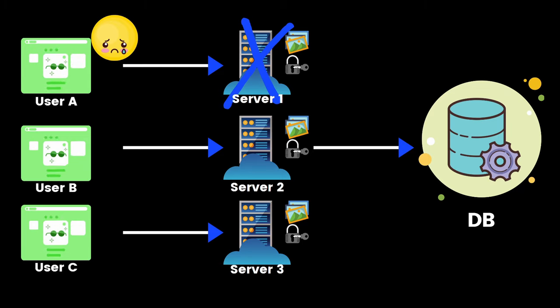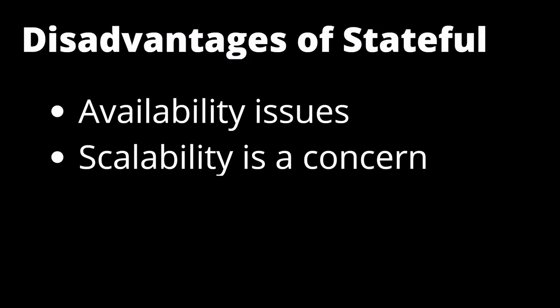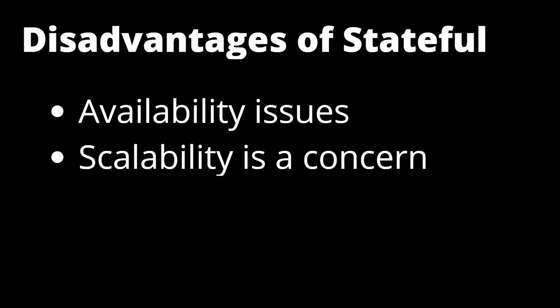When you maintain the state of information in the server, at any point of time if there is an issue with the server then the user's data is lost, and we cannot route the user to server two or server three. The basic disadvantage of stateful architecture is availability issues. If server one is down and we redirect the user to server two, the state is lost and there will be a lot of pressure on server two from other users maintaining their state there as well.